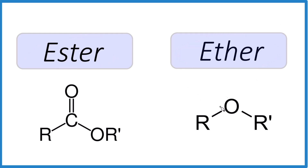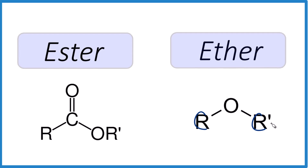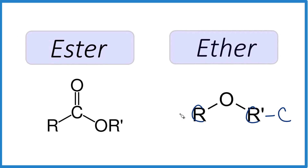Let's start with the ether. Essentially we have a carbon bonded to an oxygen and then another carbon. The prime means these don't have to be the same — we could have two carbons on either side. Remember carbon bonds to four things, so the remaining bonds on the carbon atoms will be hydrogens. That's our ether: a single bond oxygen between these carbons.